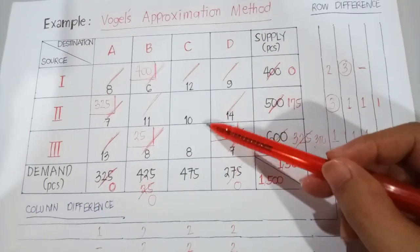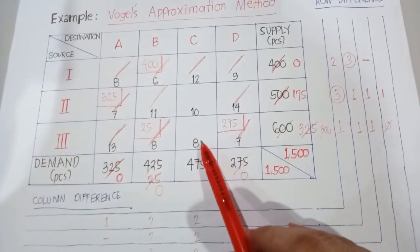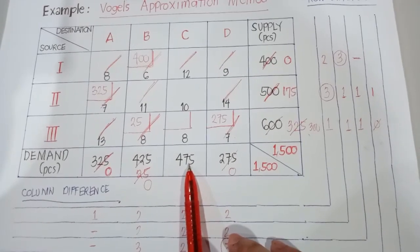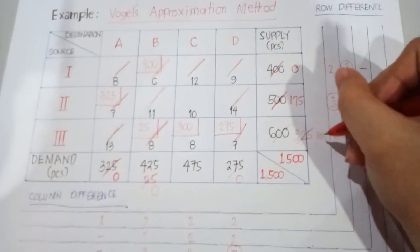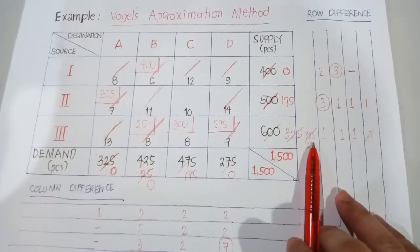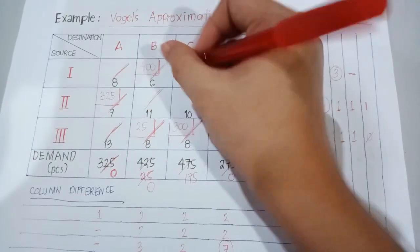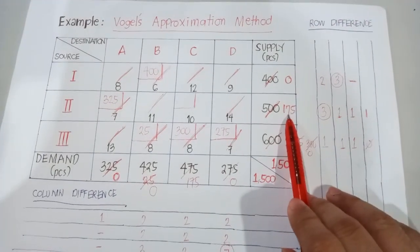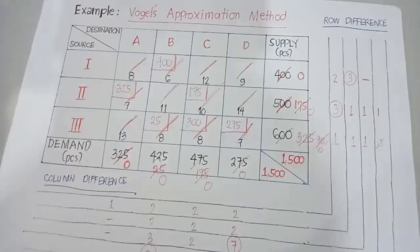We are left with two cells: 8 and 10. The least value is 8 (row 3, column C). Matching demand of 475 and supply of 300, we allocate 300 — the least value. Supply becomes 0 and demand becomes 175. That row is exhausted and canceled. We are now left with the last cell. Both the quantity of demand and supply are the same, so we copy that amount — 175 — and both become 0. It is also canceled out.